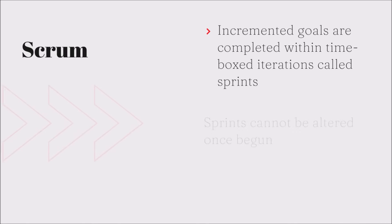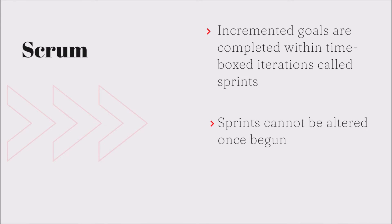Next is Scrum. Like the other Agile frameworks, the project is broken down into smaller incrementals. Incremented goals are completed within time-boxed iterations called sprints. Sprints cannot be altered once begun.